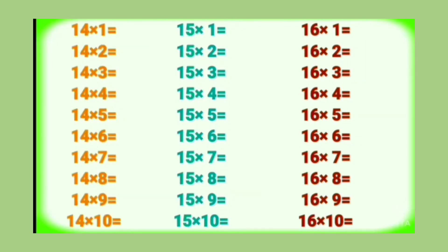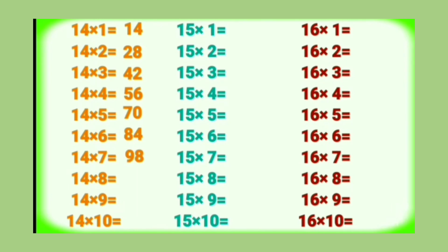Table of 14: 14 1's are 14, 14 2's are 28, 14 3's are 42, 14 4's are 56, 14 5's are 70, 14 6's are 84, 14 7's are 98, 14 8's are 112, 14 9's are 126, 14 10's are 140.